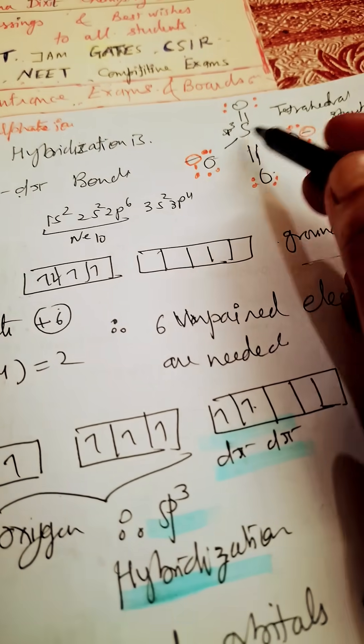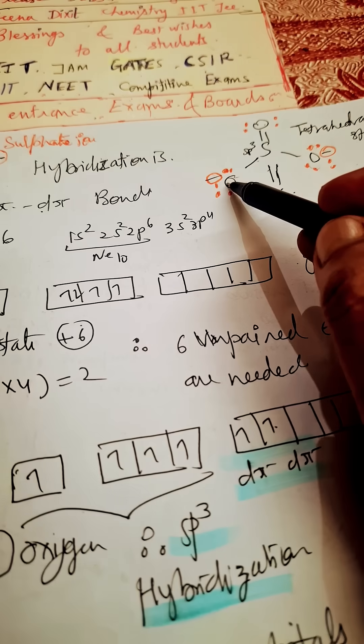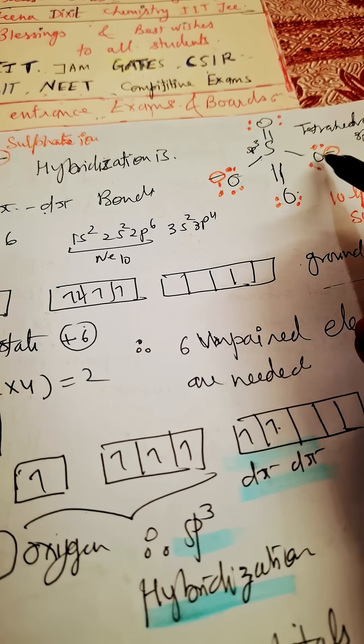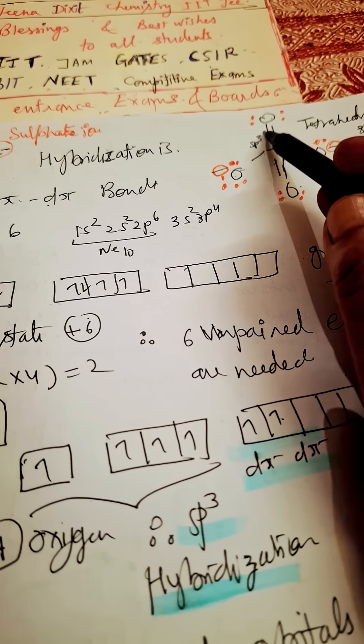...two double bonds, one with an oxygen and one oxygen. In these oxygen-sulfur bonds, one oxygen is having negative charge and this oxygen is having negative charge, so there are two...